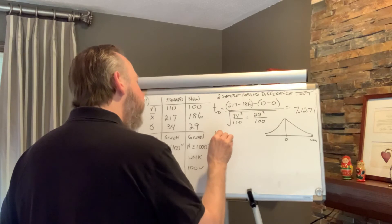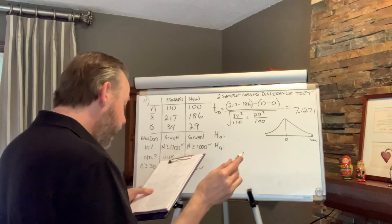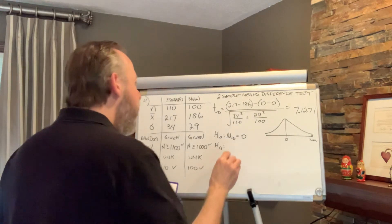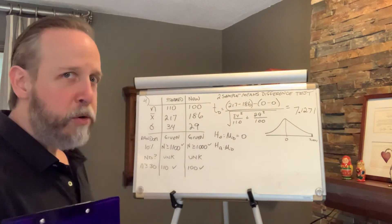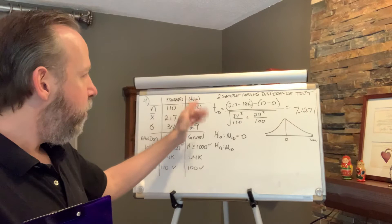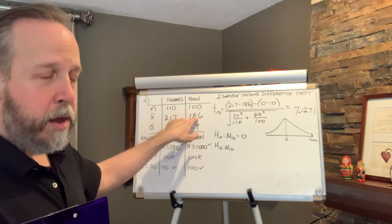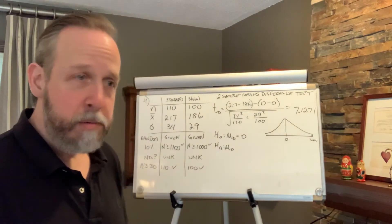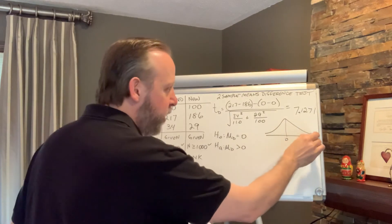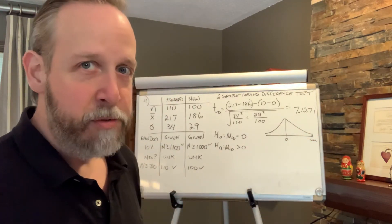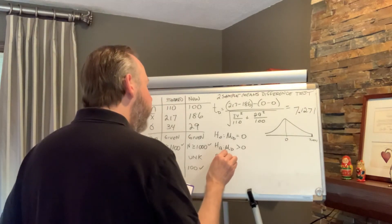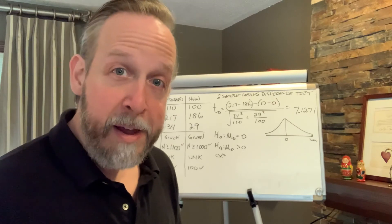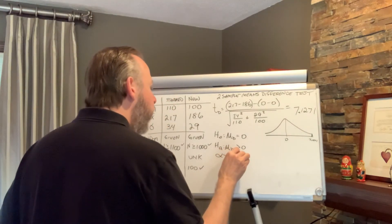My null hypothesis is that the mean difference equals zero — there was no difference between the two procedures. For the alternate: if the new procedure results in a shorter recovery time, the difference taken as standard minus new (high minus low) is a positive number, so the alternate is greater than zero, which is why I'm shading to the right. Using an alpha level of 5% — or even 1% for a medical procedure — you'll see in a moment why it doesn't matter at all.